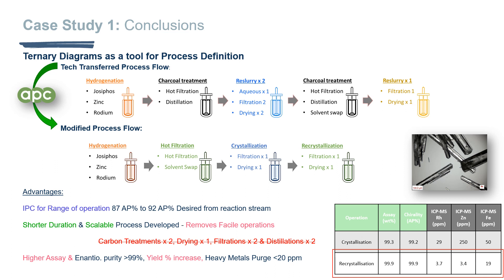In case study one, we employed a ternary phase diagram as a key tool in the development of a chiral crystallization. This enabled a scalable, shorter, and more robust process where unnecessary carbon treatments, drying, and distillation steps were effectively removed. The resulting process gave improved yield, enantiomeric purity, assay, and better heavy metal purging.